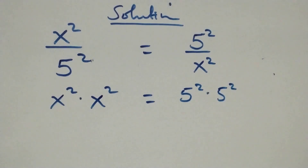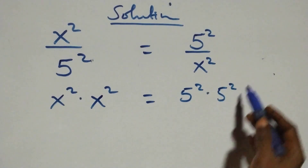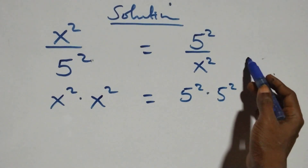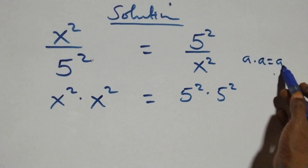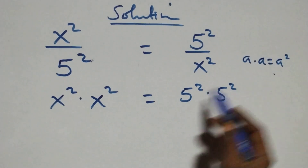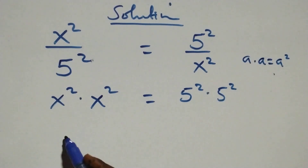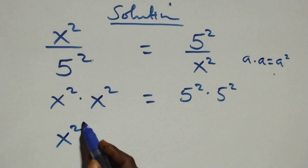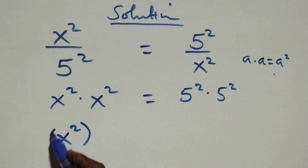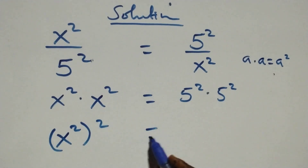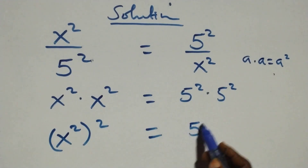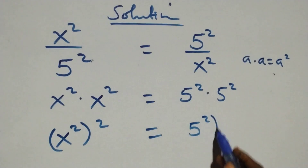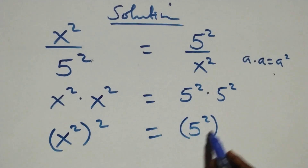Then following on, we have x squared over 4 squared equals to 5 squared over 4 squared.